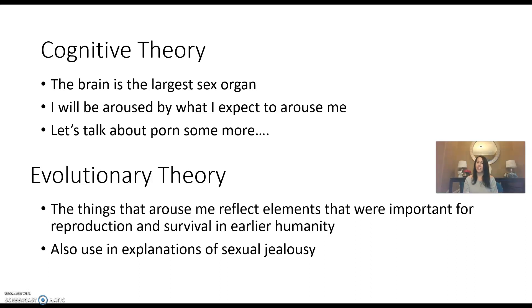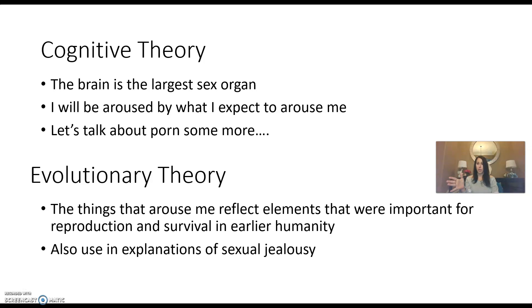A really interesting component of evolutionary theory is when they start getting into jealousy. There's some older research — the accuracy of which has been greatly debated — that breaks infidelity into two components: physical infidelity, when you're actually physically sexually intimate with another person, and emotional infidelity, when you fall in love with another person whether or not anything physical happened. The theory held that heterosexual cisgender women get more upset about emotional infidelity.